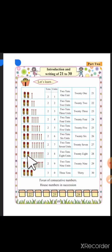2 tens, 20 and 8 units is equal to 28. 2 tens makes 20 and 9 units is equal to 29. 3 tens makes 30.